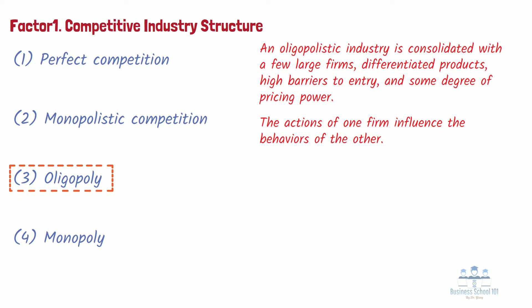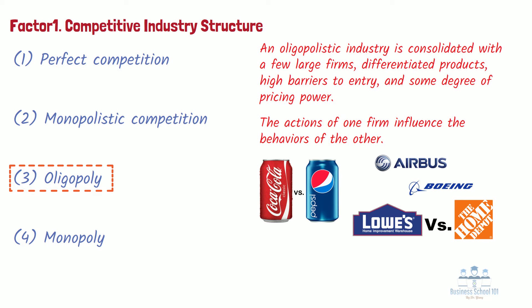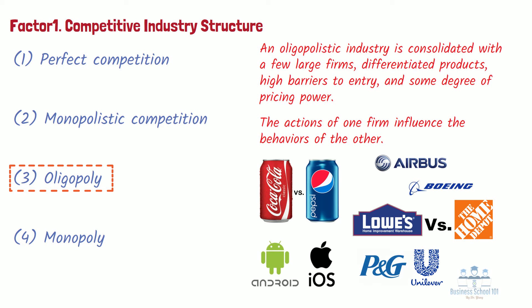Examples of oligopolies include the soft drink industry (Coca-Cola vs. Pepsi), airframe manufacturing (Boeing vs. Airbus), home improvement retailing (The Home Depot vs. Lowe's), operating systems for smartphones (Apple iOS and Google Android), and detergents (P&G vs. Unilever).